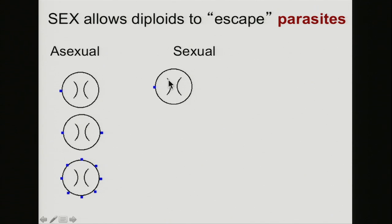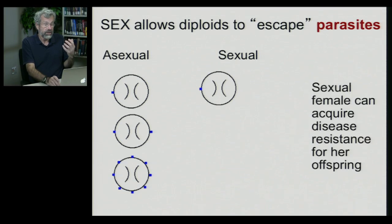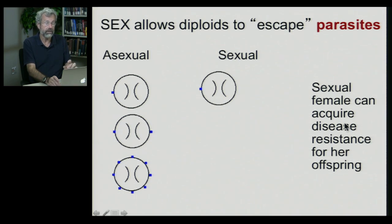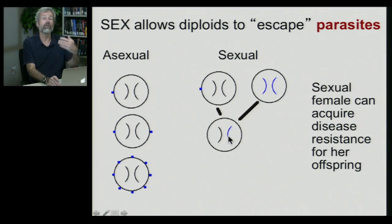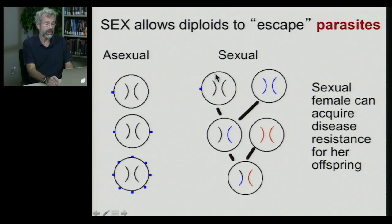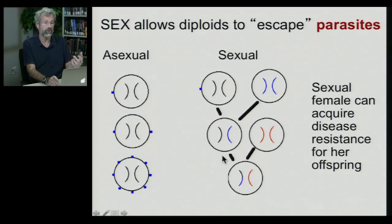In contrast, with sexual reproduction, if we have a female who by chance has been infected by a parasite, she might be able to find a healthy husband. In the population there might be a male who is resistant to whatever disease she's susceptible to. If she's able to obtain a resistant genome for her offspring from her husband, then her children will temporarily escape from parasitic infection. The sexual lineage is able to obtain new genetic material from healthy individuals in the population selectively and pass it on to their offspring, thus maintaining much higher resistance to disease generation after generation.